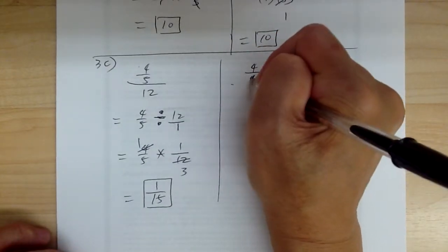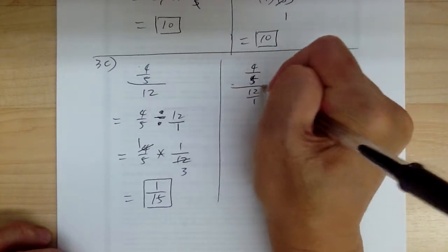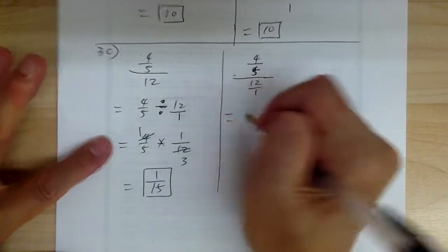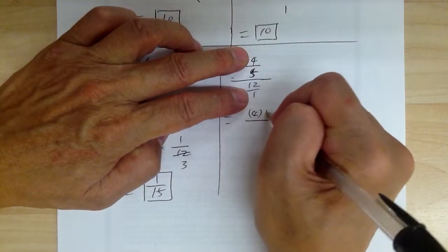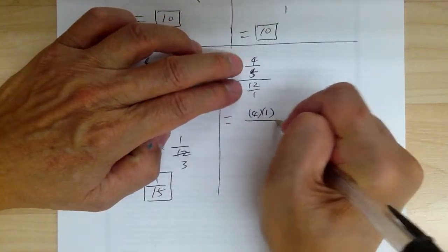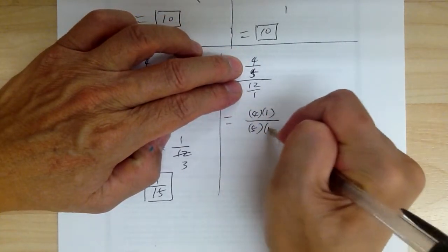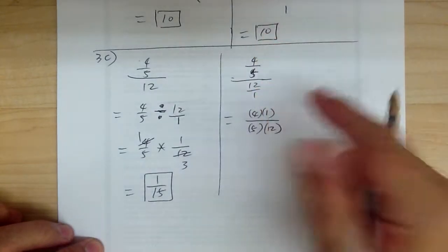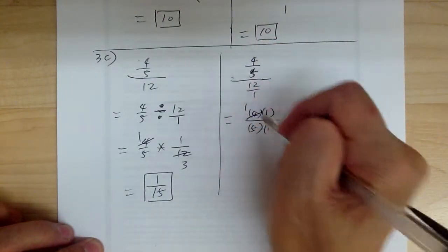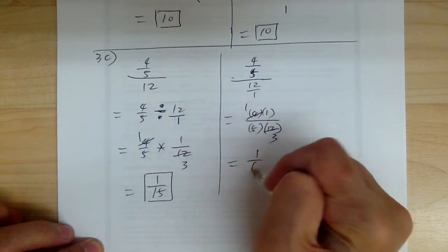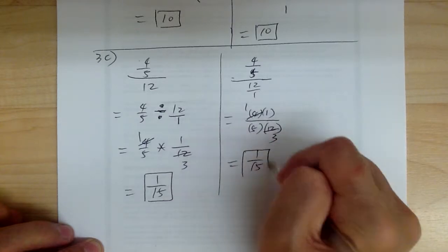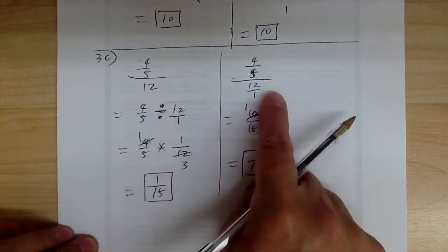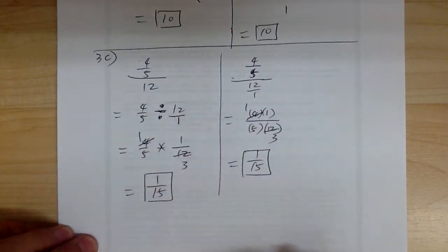You can do the same thing using 4 over 5 over 12 over 1 with the outer over inner technique. Outer gives you 4 and 1; inner gives you 5 and 12. You can cancel, and the answer is 1 over 15. It's the same thing — this method saves you one step.